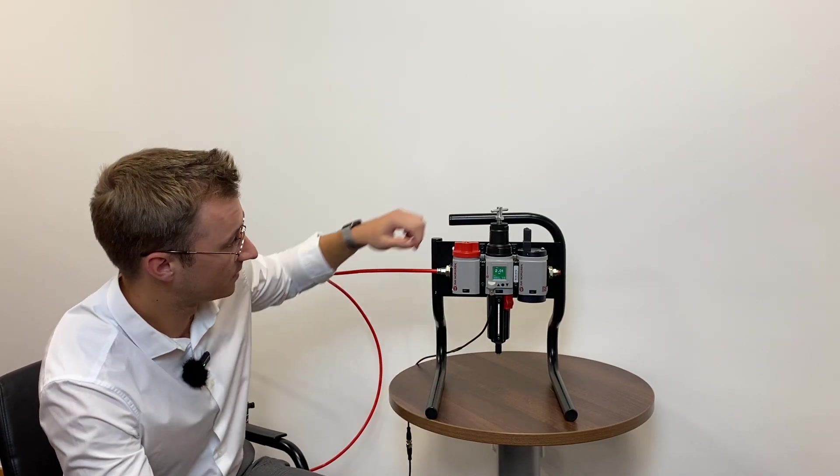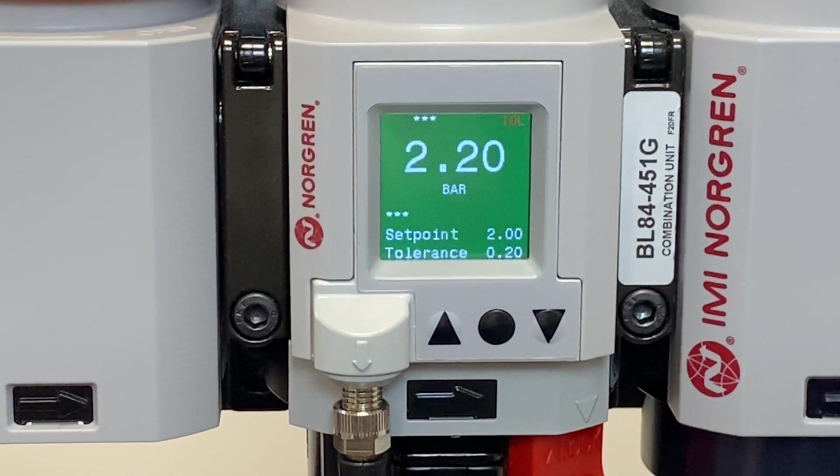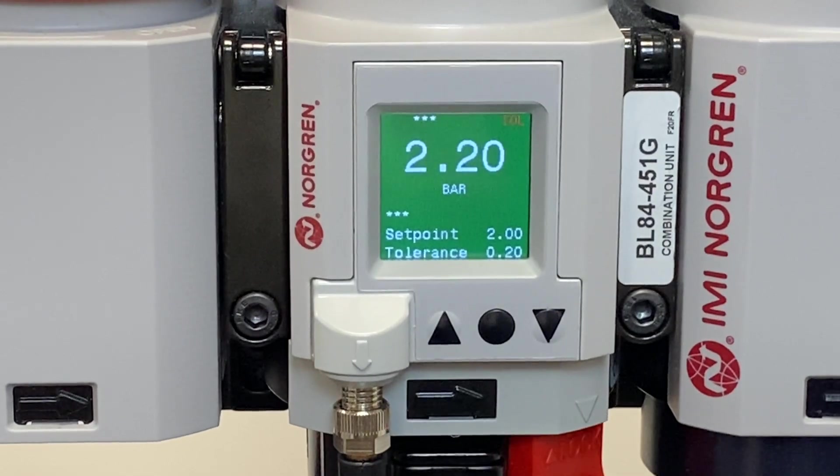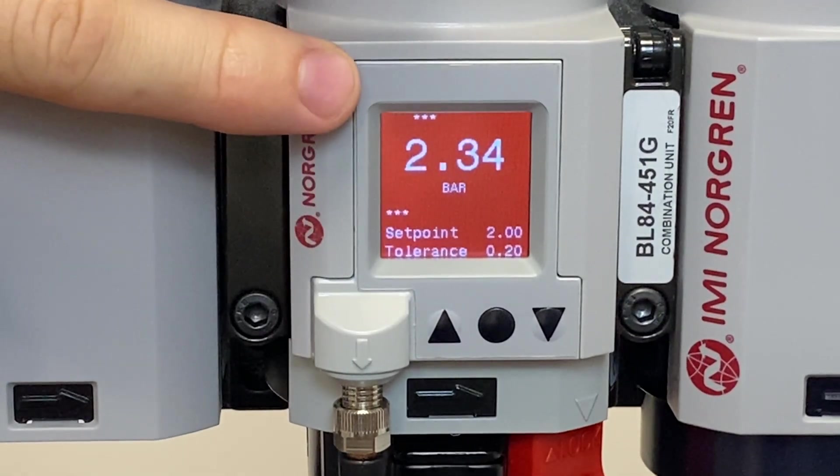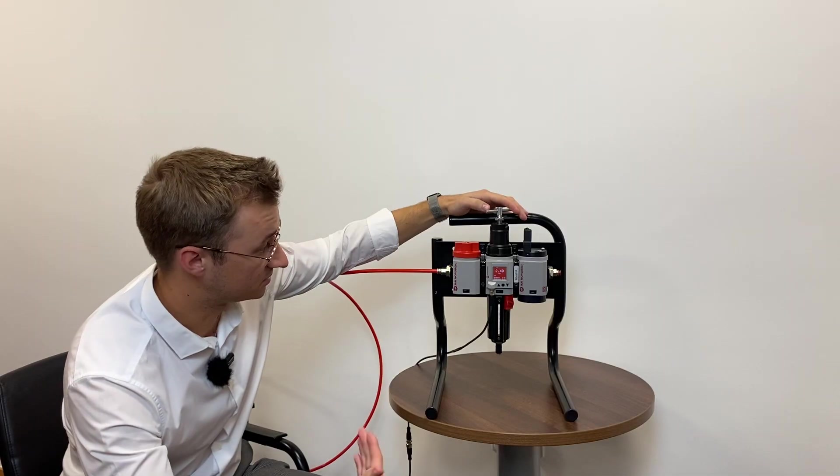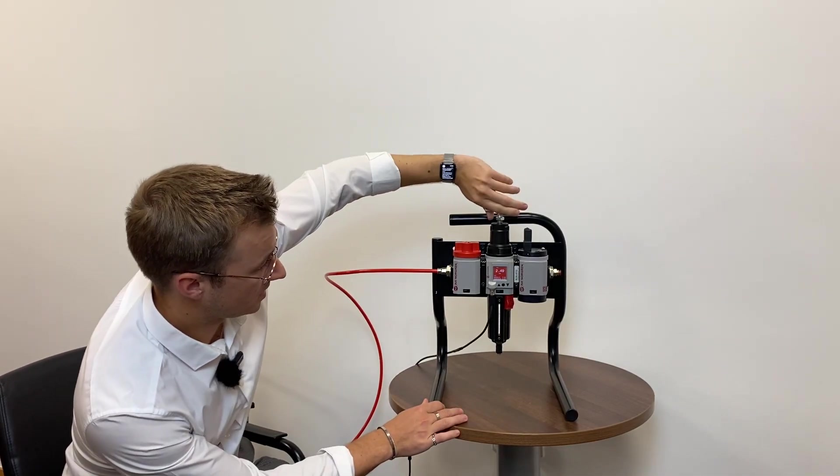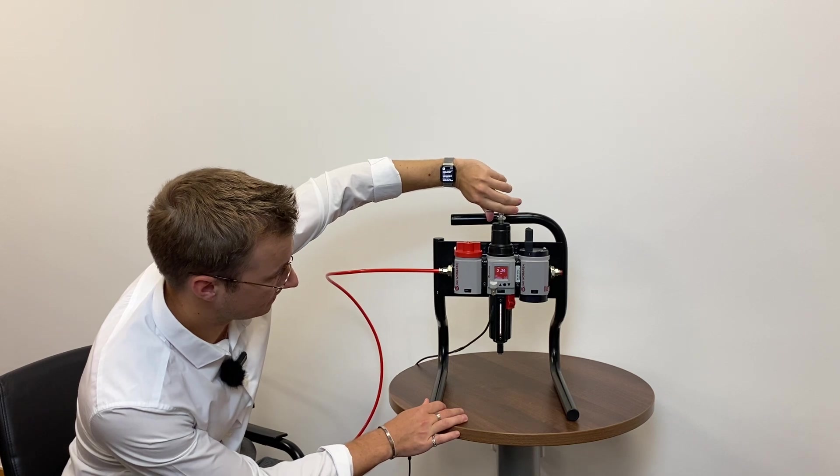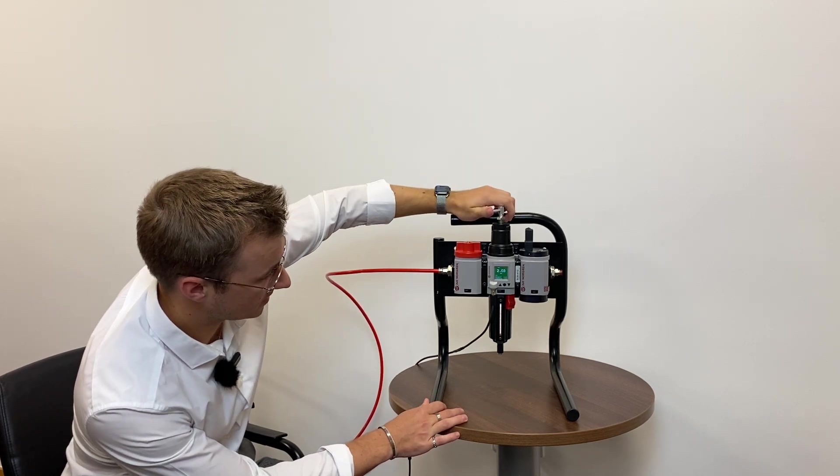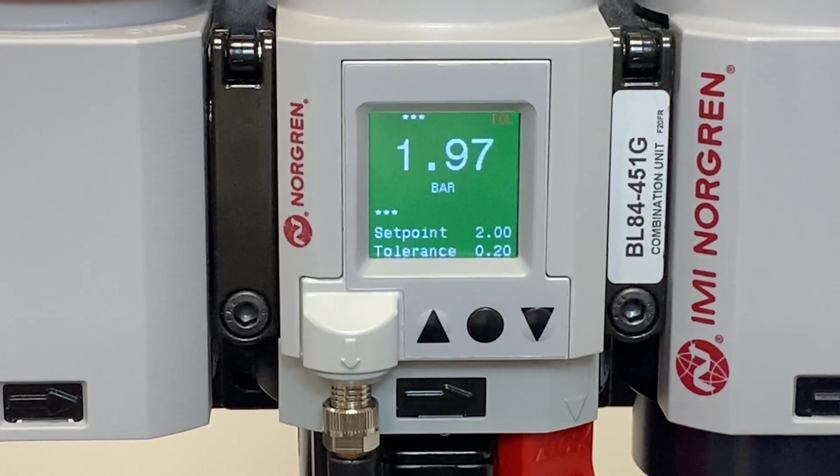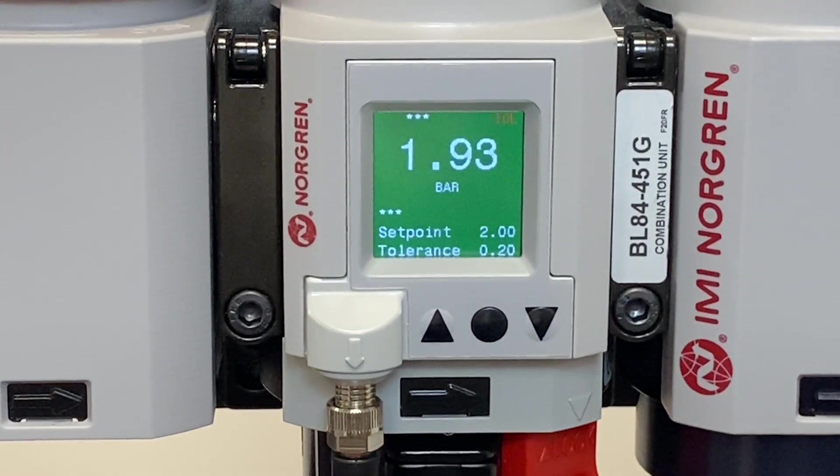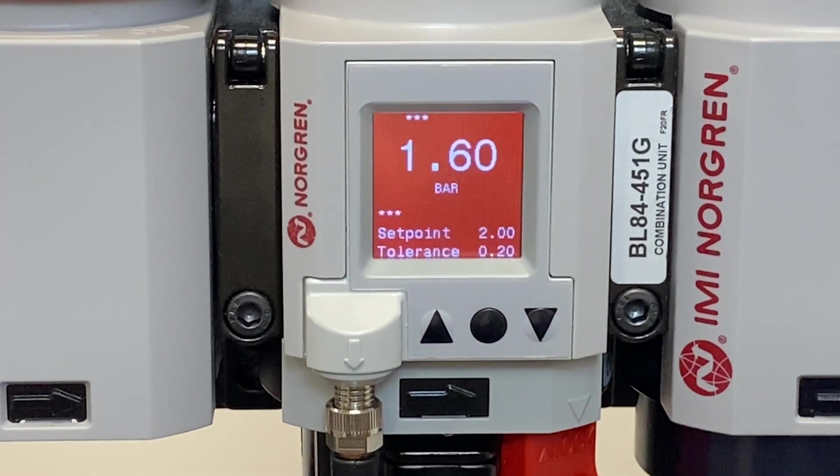If I do this here and increase the pressure, we're going to go outside of that tolerance zone and you're going to see the screen flash red and stay red, so you know you've got over pressure in your system. If I dial it back this way, take it back through the green zone, and under 1.8 bar, we're now going to see that we've got under pressure in the system and the screen again is going to show red.